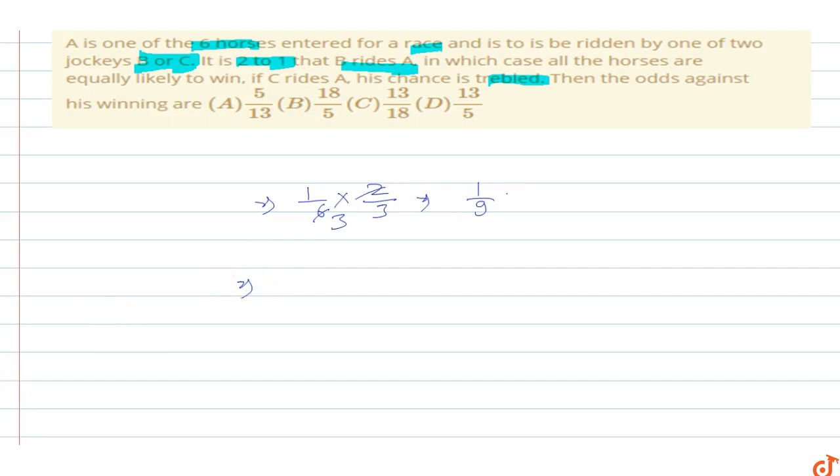If C rides A, the probability is 1/3 times 1/6 times 3. This is tripled, so 3 times 1/6 equals 1/6.